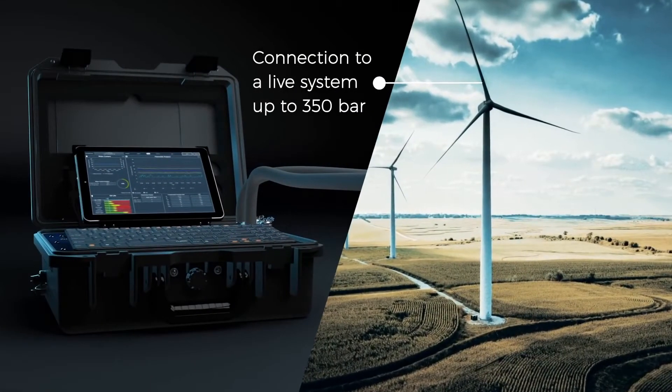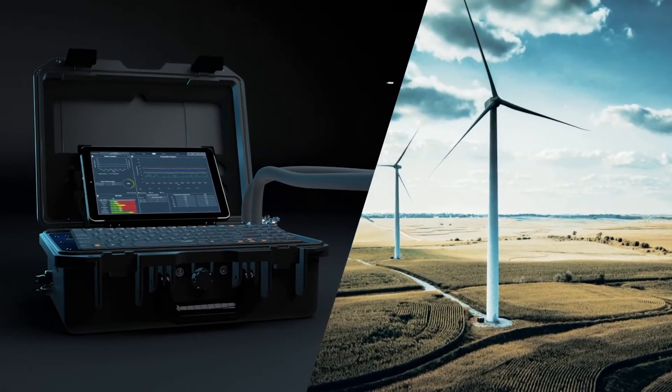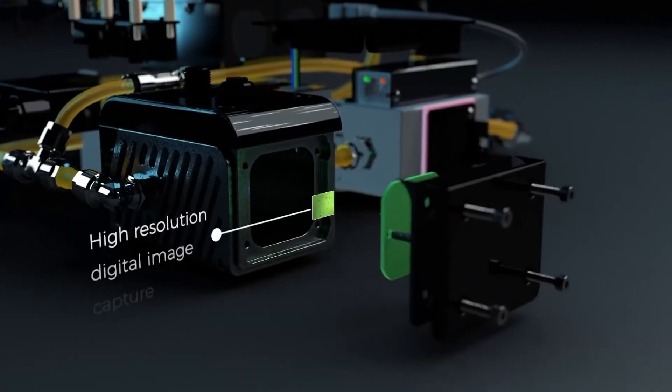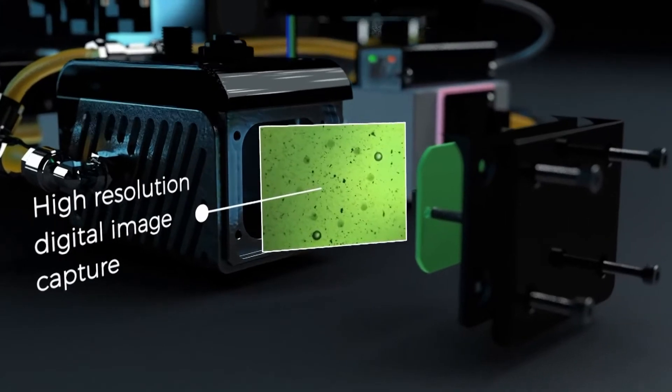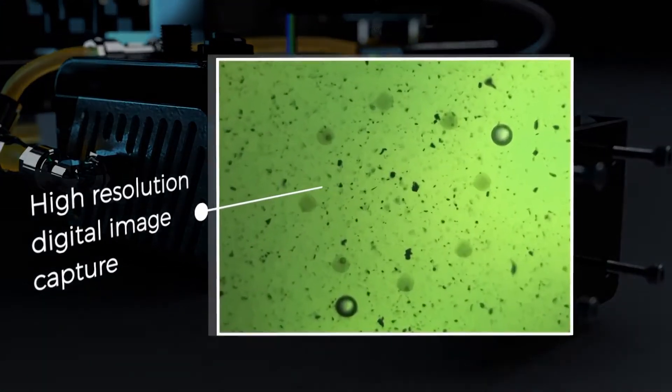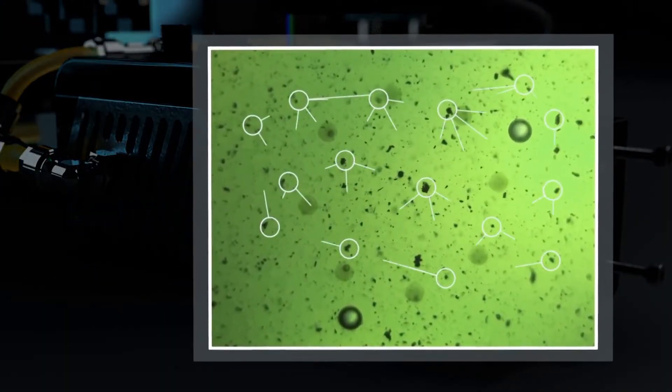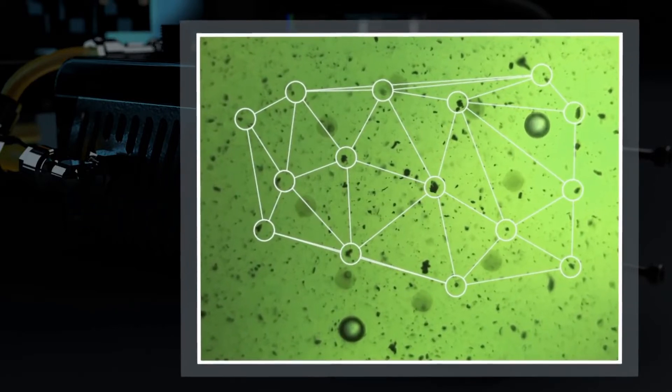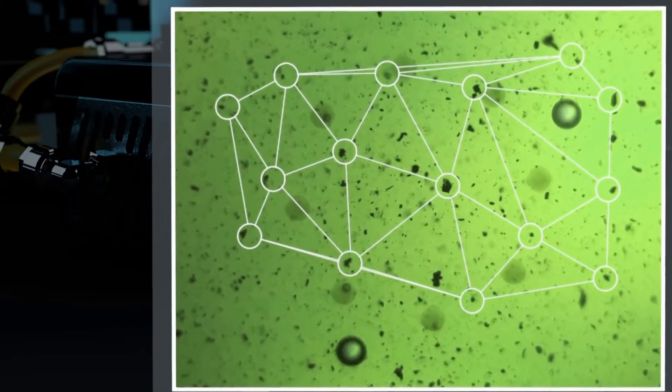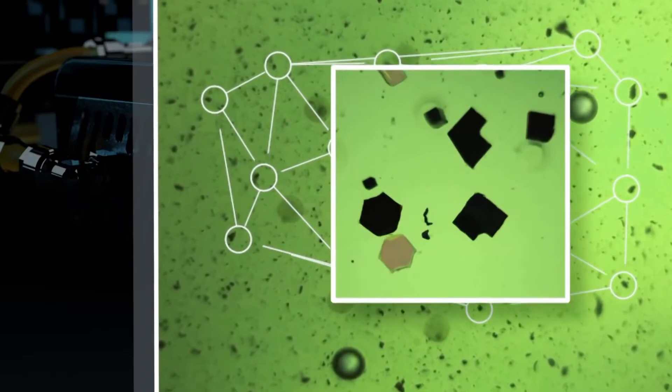The digital imaging particle counter uses high-resolution color image capture combined with advanced algorithms to sort particles into fatigue wear, cutting wear, sliding wear, and fiber identification, giving root cause analysis and ISO counts. Specific particles can be measured and analyzed in detail.